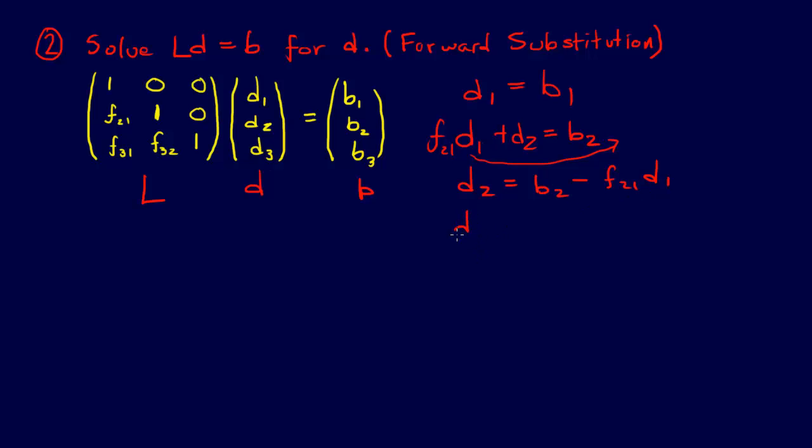And then we say F31 D1 plus F32 D2 plus D3 equals B3.